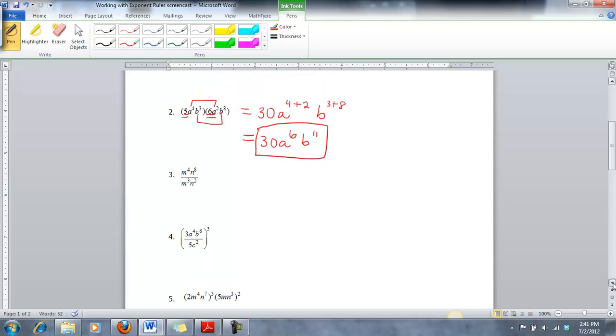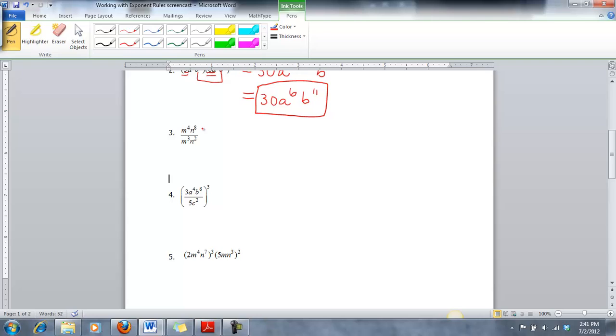Number three also has two variables to it, but you'll notice this one is a dividing problem. That means we're going to need to use the rule that when you divide you subtract your exponents. We can break these up so you can see them separately. So those are our m's there and these are our n's over here. That's going to give us m to the four minus three, because those are both of my exponents on the m's. Then we'd have n to the eight minus two, since those are my n exponents. You notice I did the top minus the bottom. That's the order you always have to go in.